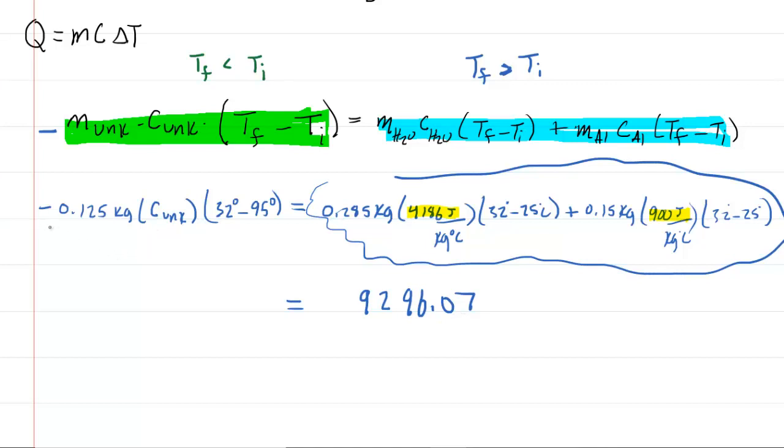Then on the left side, you would multiply the negative 0.125 by this quantity right here. And when you do that, you get 7.875. This is multiplied by the specific heat of the unknown. If we look at the units, this 7.875 was obtained by multiplying kilograms and degrees Celsius. So you could write kilograms degrees Celsius right there.